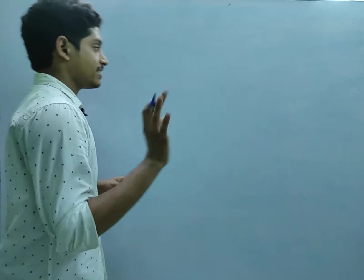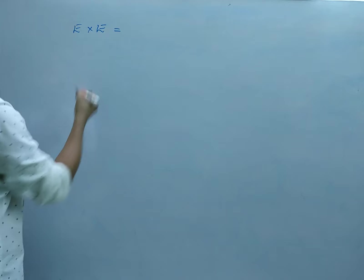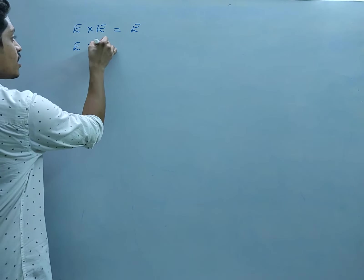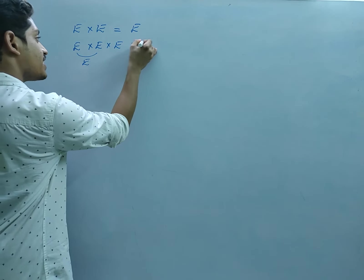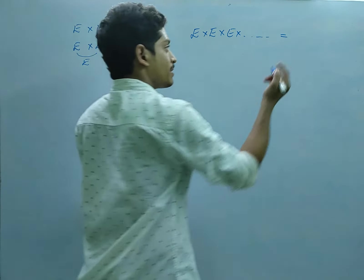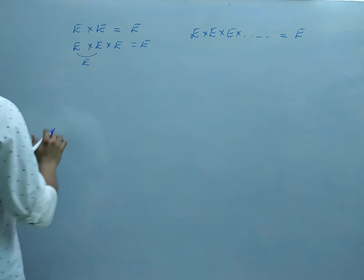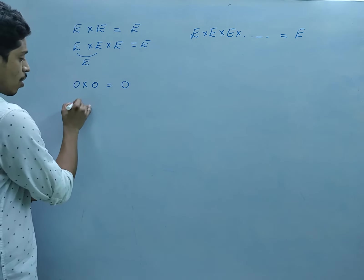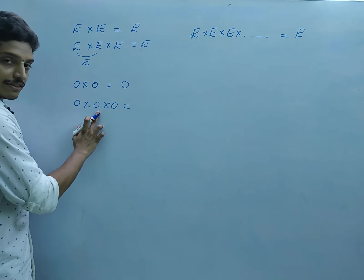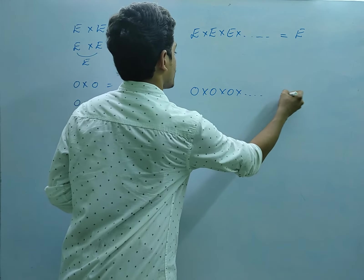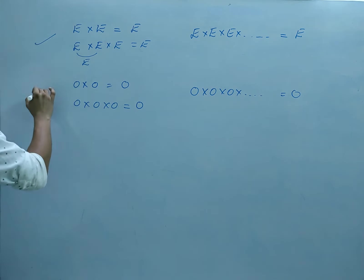Now let us look at multiplication. When you multiply even numbers — even into even — the result is even. For example, 4×2=8, which is even. Also, multiplying any number of even numbers always results in an even number. Next, odd into odd: for example, 5×3=15, which is odd. So odd into odd into odd gives odd — multiplying any number of odd numbers always gives an odd result.